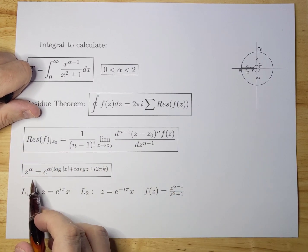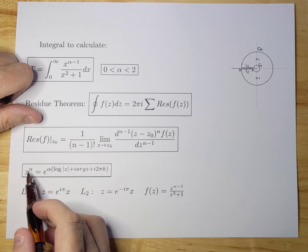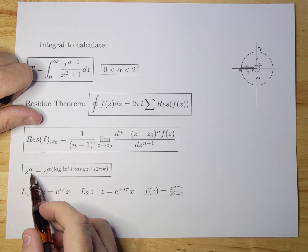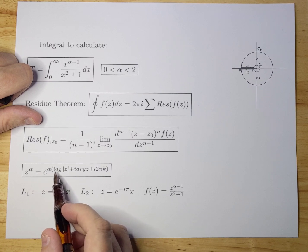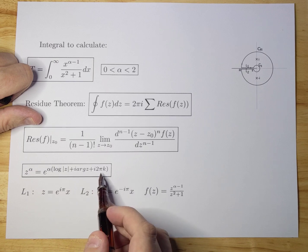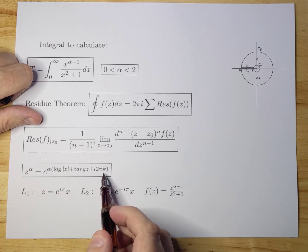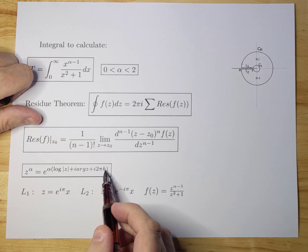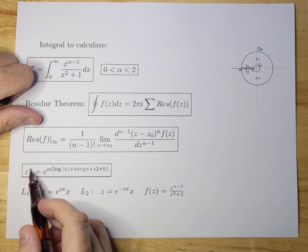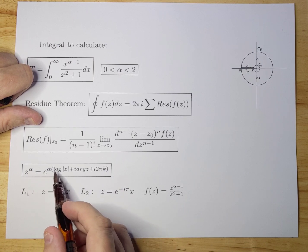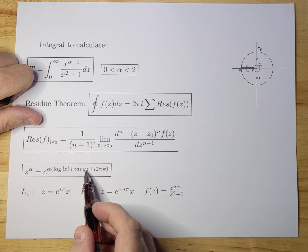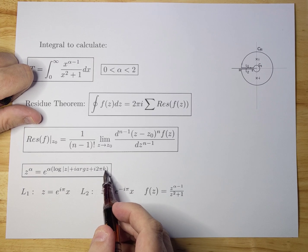We also need the definition of z to the power alpha, because z to the power alpha is a multivalued function. We can define that as such. I'm only going to focus on the main branch, so k will be 0. So we only look at z to the power alpha equals e to the power alpha times (log|z| + i·arg(z)), and we're not going to take care of k today.